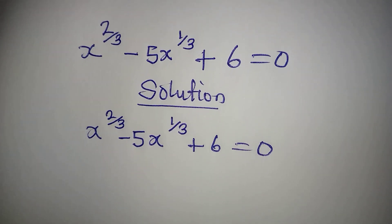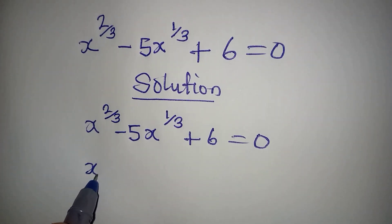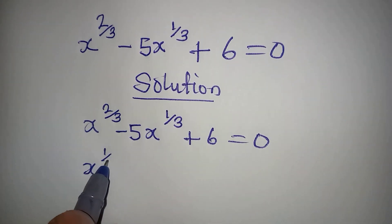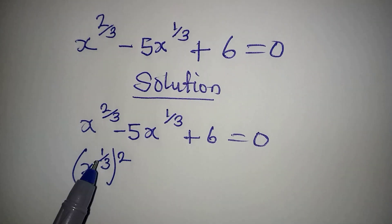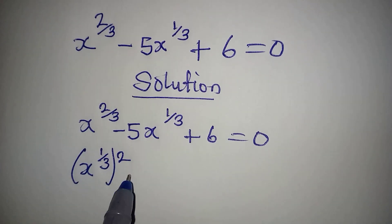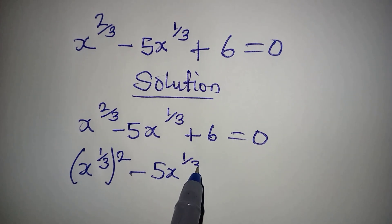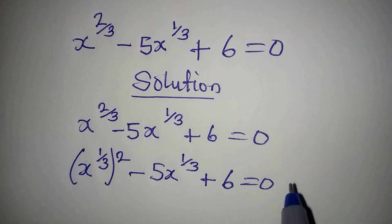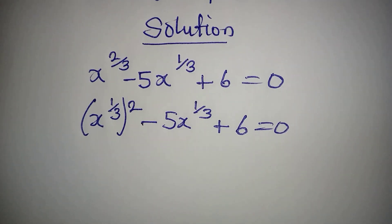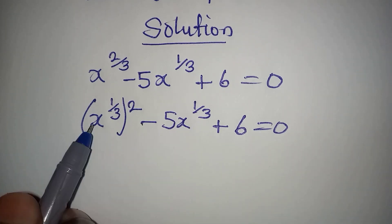Now look at what we are going to do. We can write x to the power of 2 over 3 as x to the power of 1 over 3, to the power of 2 — because if you open that bracket you get the original term back. So we now have x to the power of 1 over 3, squared, minus 5x to the power of 1 over 3, plus 6, equal to 0. The reason for this is to have x to the power of 1 over 3 appearing in two places.